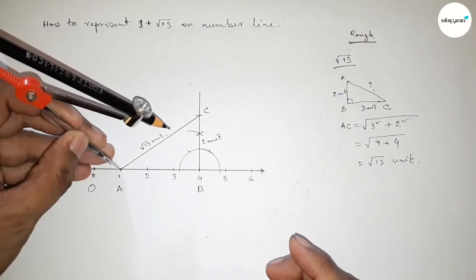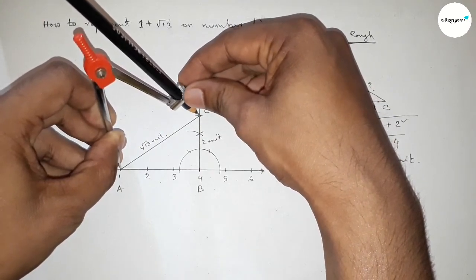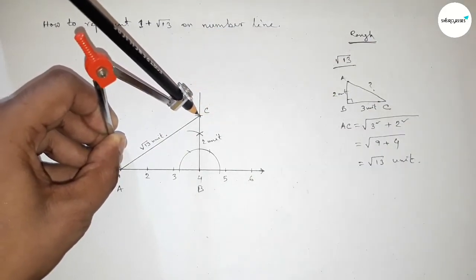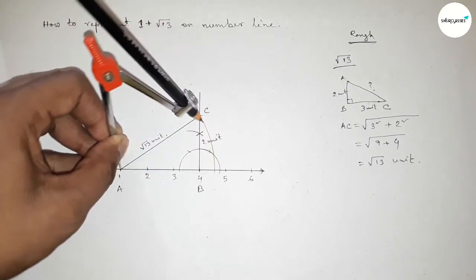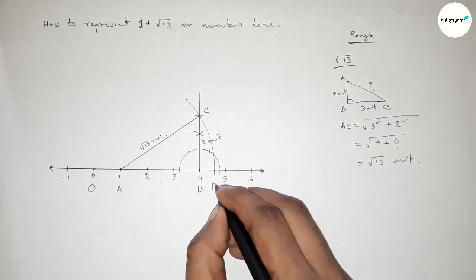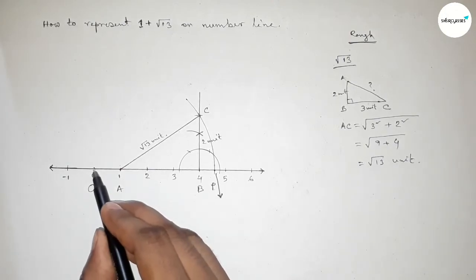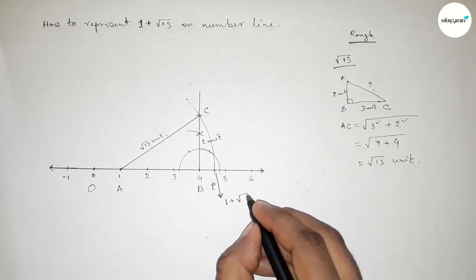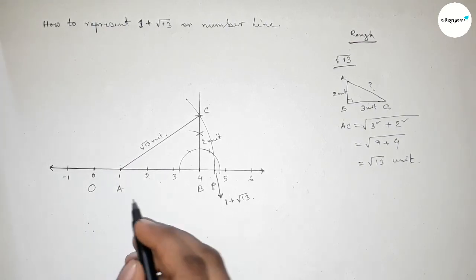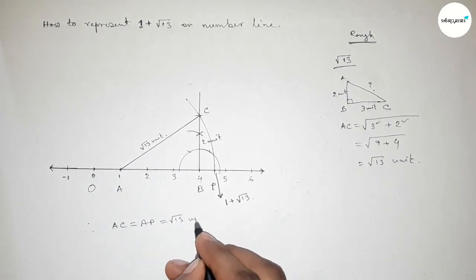Now taking the length AC using the compass, and drawing an arc which meets the number line at a point P. So from point O to point P, this total length is 1 plus root 13. Therefore AC equals AP equals root 13 units.